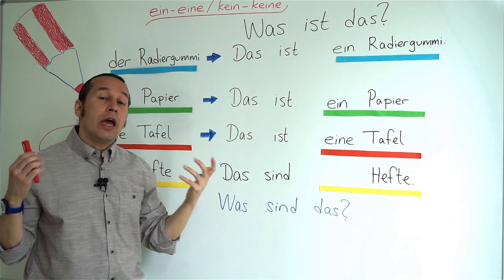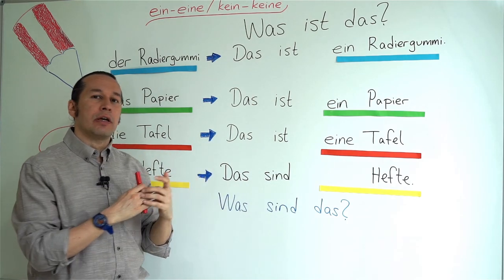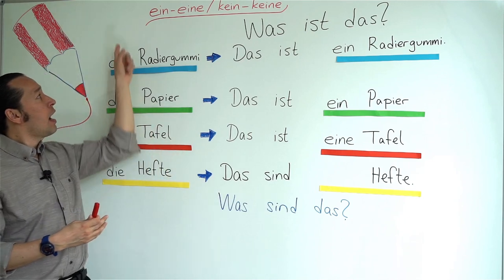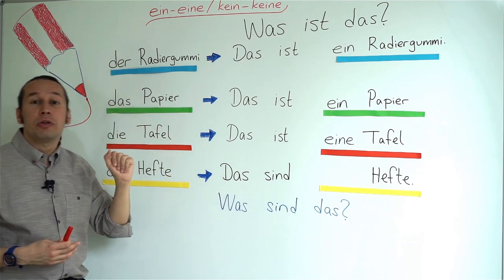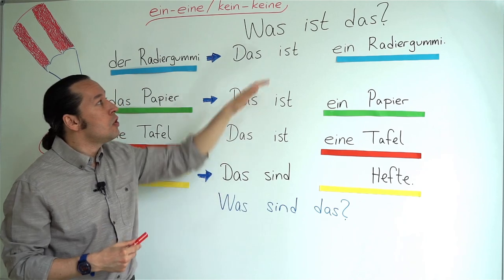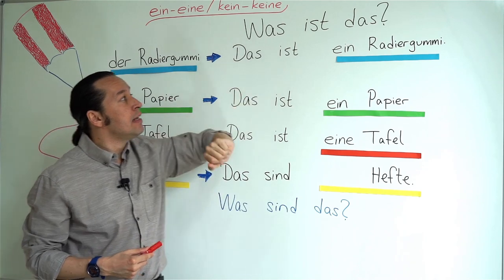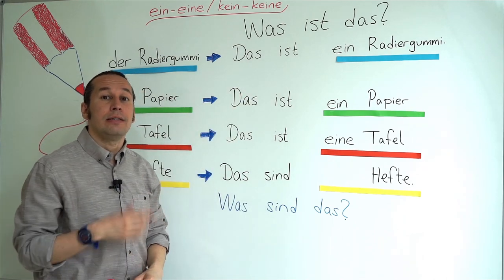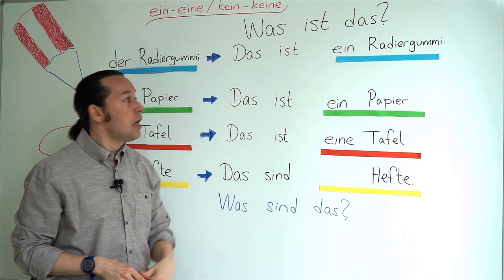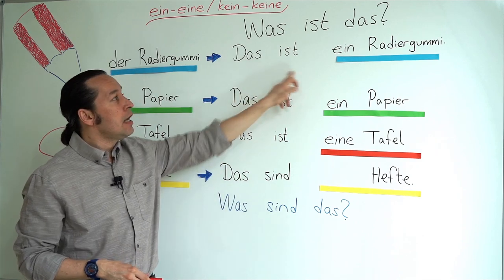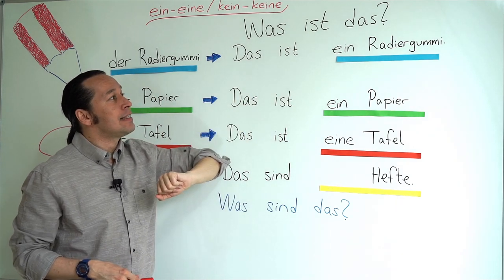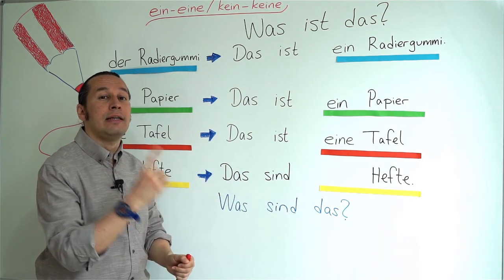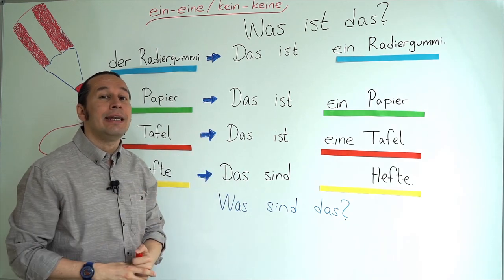If I mention a specific eraser, I need to put the article 'der': Das ist der Radiergummi — this is the eraser. But here we say: Das ist ein Radiergummi — this is an eraser.